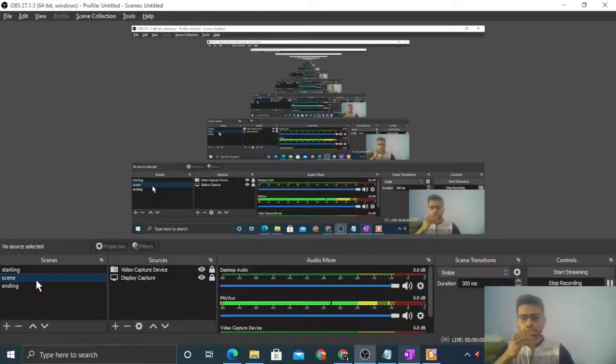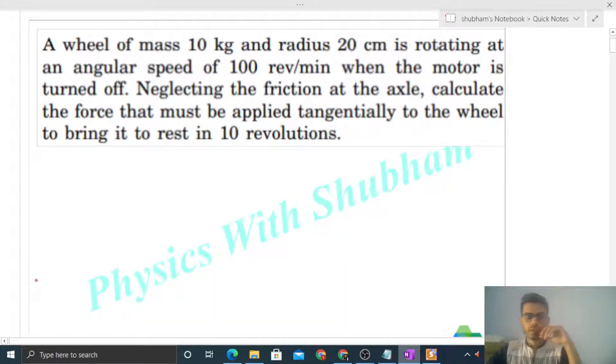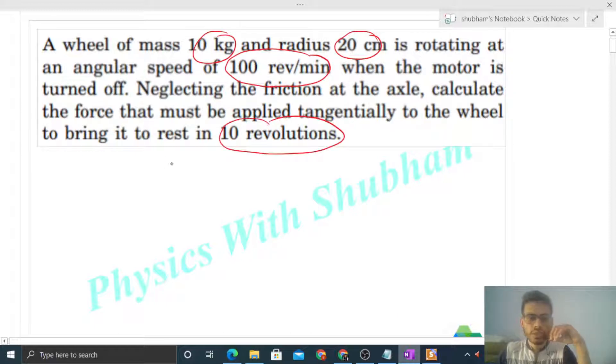Okay, hi everyone. Today let's discuss this interesting problem. It says a wheel of mass 10 kilogram and radius 20 centimeter is rotating at an angular speed of 100 revolutions per minute when the motor is turned off. Neglecting the friction at the axle, calculate the force that must be applied tangentially to the wheel to bring it to rest in 10 revolutions.